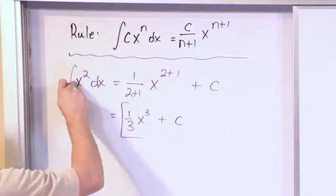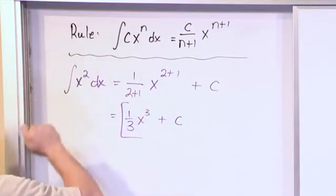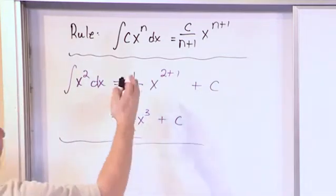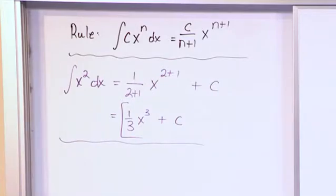So again, you take whatever is in front and then divide it by 1 plus the exponent and then you raise x to 1 plus the exponent. And once you get the hang of this, because it just involves simple addition of exponents like this, it's very simple and very easy to remember.